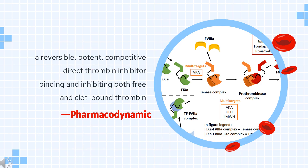Pharmacodynamics: Dabigatran is a reversible, potent, competitive direct thrombin inhibitor. Unlike heparin, which can only bind free thrombin, dabigatran is capable of binding and inhibiting both free and clot-bound thrombin. Understanding the role of thrombin in coagulation is central to the mechanism of action of dabigatran and other anticoagulants. In contrast, direct thrombin inhibitors such as dabigatran can inhibit free, fibrin-bound, and clot-bound thrombin.